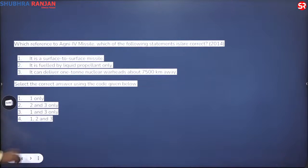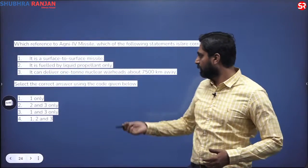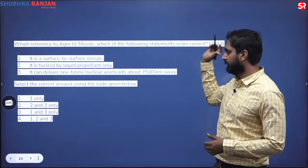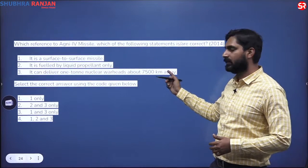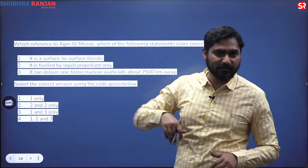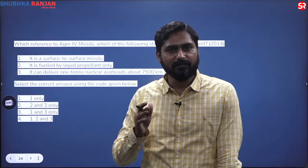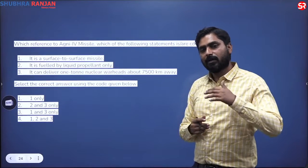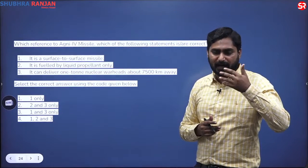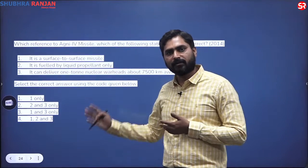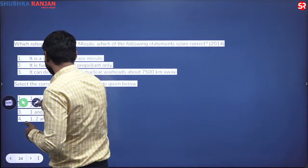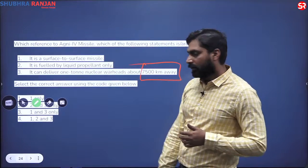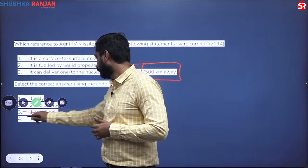In defense technology, this question shows how they play with numbers. Agni 4 missile — which of the following statements is correct? It is a surface-to-surface missile: true. But the option says it can deliver nuclear warheads about 7,500 kilometers away. We know Agni 5 is an intercontinental ballistic missile with a range more than 5,500 kilometers, so Agni 4 is definitely not an ICBM — its range must be less than 5,500 km. The number 7,500 is incorrect, so the answer is one only.